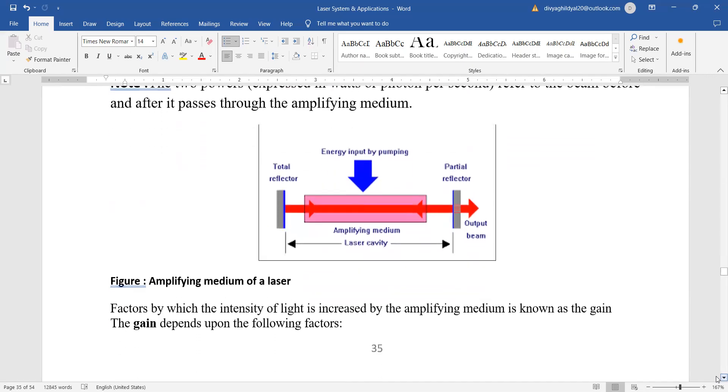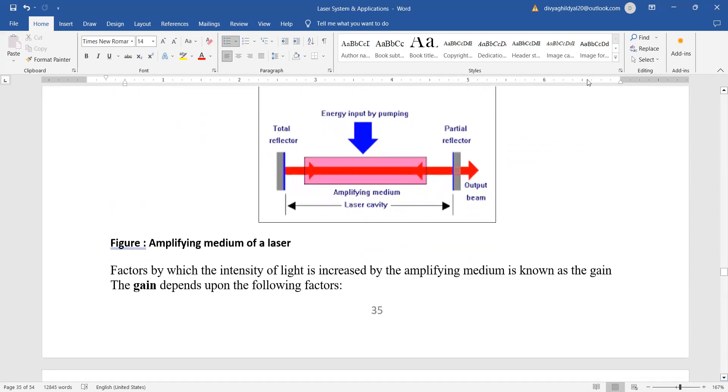Amplifying medium of a laser, you can have a look at this diagram. This is the input here, it gets amplified and we get the output. We are having two mirrors setup. One is totally reflecting and the other is a partially reflecting mirror, and this is our laser cavity. This is the amplifying medium of a laser. This diagram has been asked many times in section A.